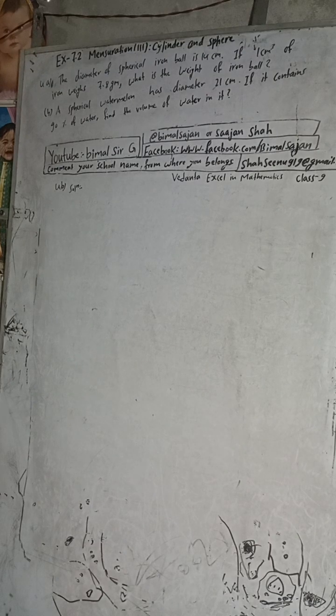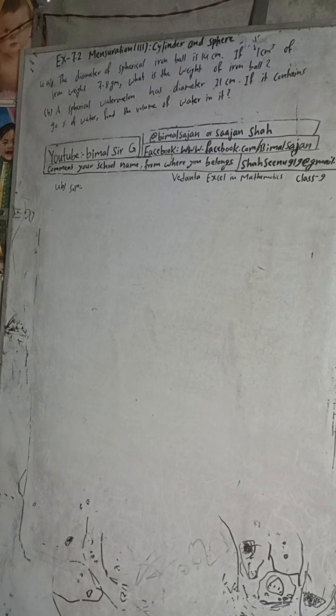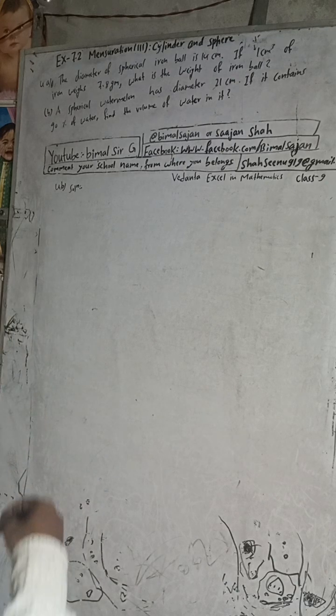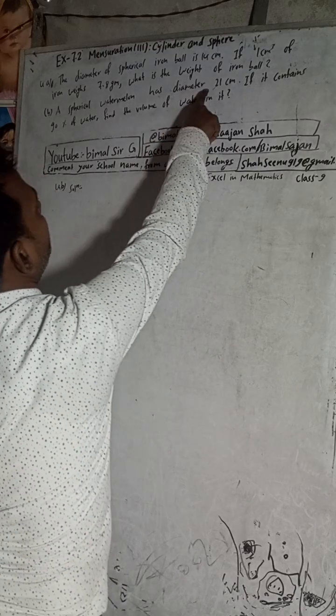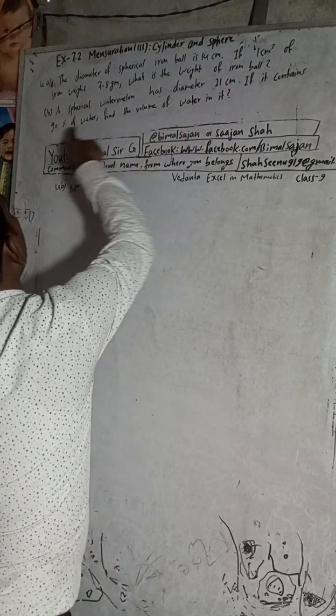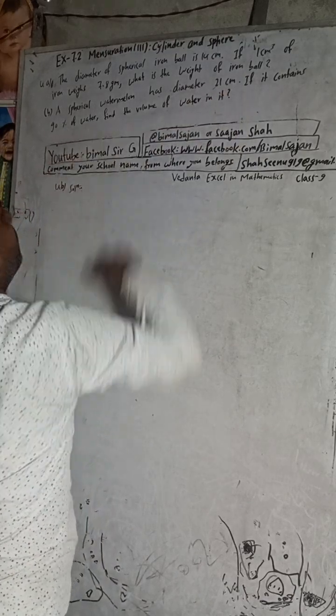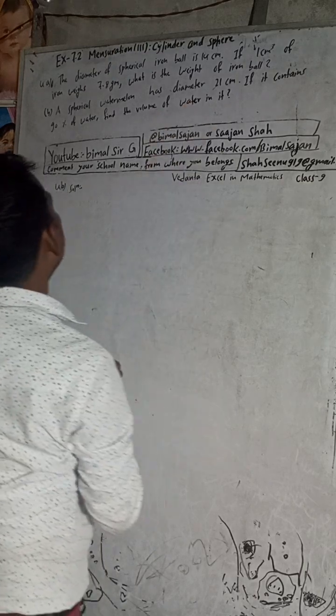Hi class 9 and 10 students, welcome back to Vimal Sir's YouTube channel. Now I am going to solve question number 4b, exercise 7.2, mensuration third part: cylinder and sphere, Vedanta Excel in Mathematics class 9. The question is: a spherical watermelon has diameter 21 cm. If it contains 90% of water, find the volume of water in it.